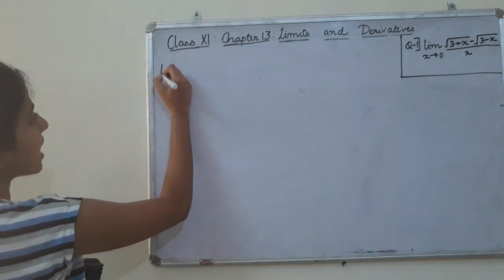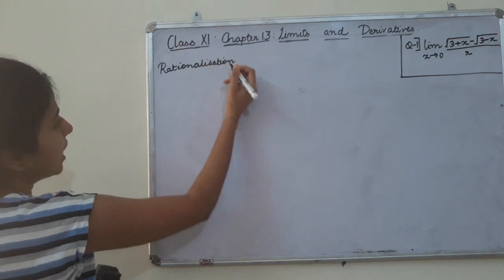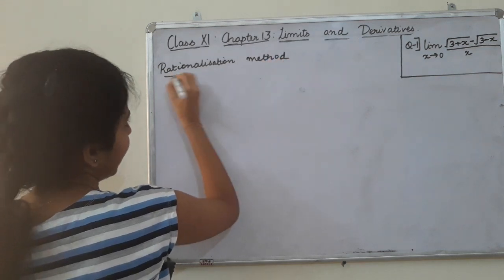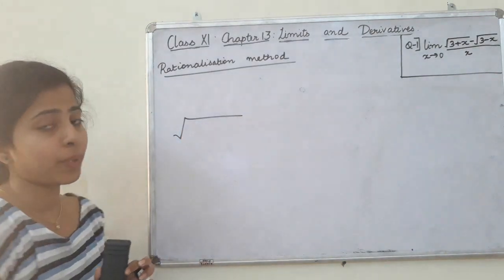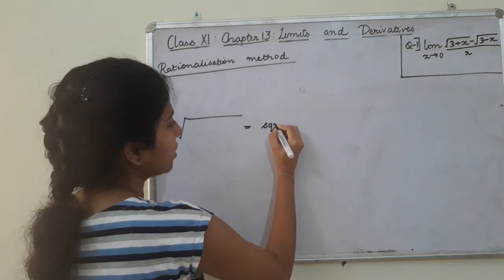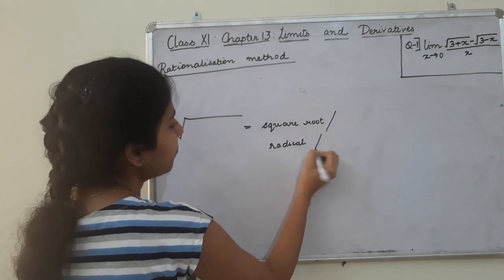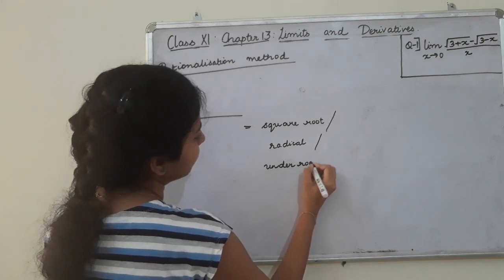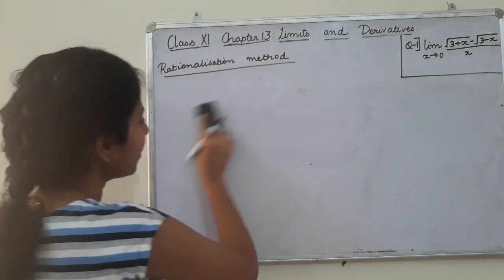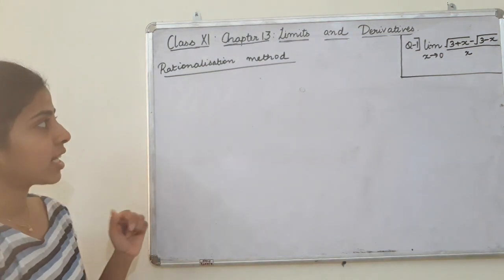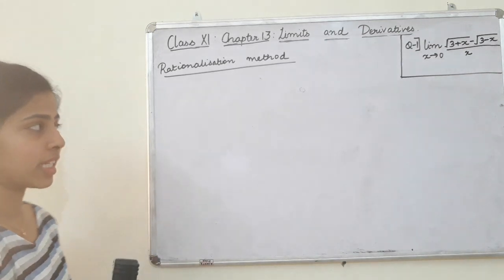Let's talk about the rationalization method. The rationalization method is used when we have a square root — also called a radical or under root. The radical sign is the same thing. We use the rationalization method when we have a radical sign in the function.